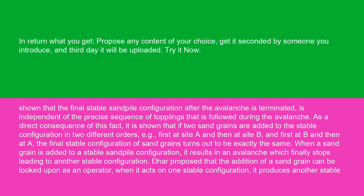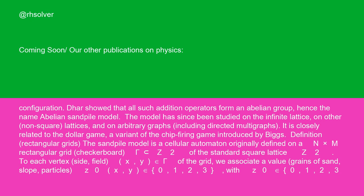It has been shown that the final stable sand pile configuration after the avalanche is terminated is independent of the precise sequence of topplings that is followed during the avalanche. As a direct consequence of this fact, it is shown that if two sand grains are added to the stable configuration in two different orders — e.g., first at site A and then at site B, and first at B and then at A — the final stable configuration of sand grains turns out to be exactly the same. When a sand grain is added to a stable sand pile configuration, it results in an avalanche which finally stops, leading to another stable configuration. The addition of a sand grain can be looked upon as an operator; when it acts on one stable configuration, it produces another stable configuration. All such addition operators form an Abelian group, hence the name Abelian Sandpile Model.